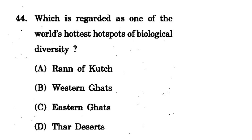Question 44: Which is regarded as one of the world's hottest hotspots of biological diversity? Options: Rann of Kutch, Western Ghats, Eastern Ghats, Thar Desert. The correct option is B - Western Ghats. Western Ghats has the highest biodiversity in the world and people visit there specifically to observe biological diversity.